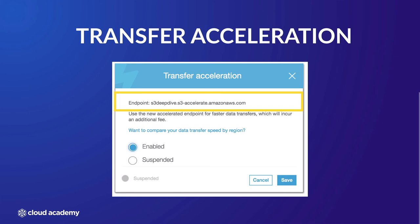To enable Transfer Acceleration, your bucket name must be DNS compliant and not contain any periods at all. Also, to make use of the Transfer Acceleration feature itself, any requests such as GET or PUT to the bucket must use this new Transfer Acceleration endpoint.